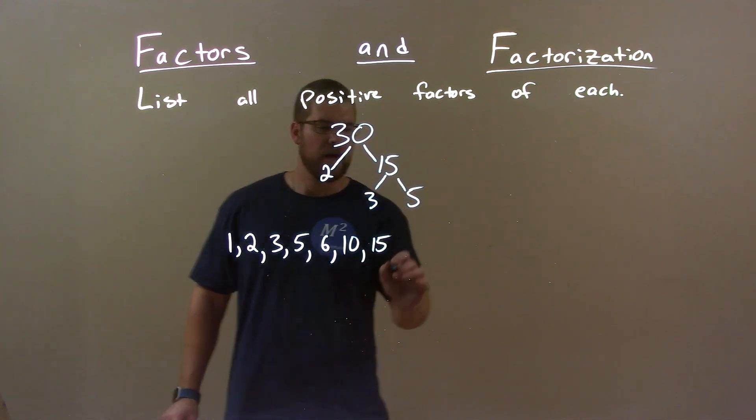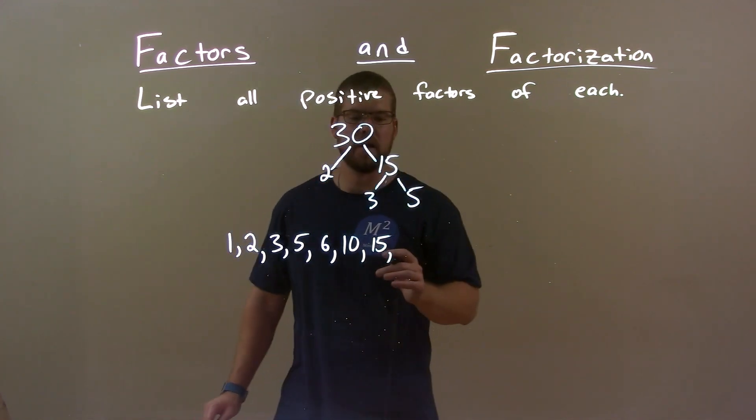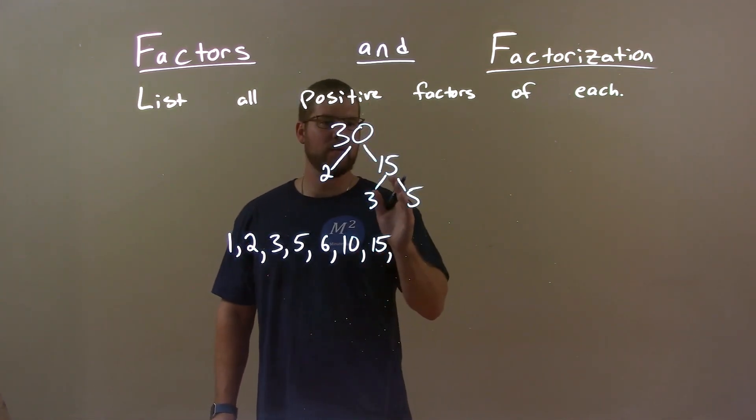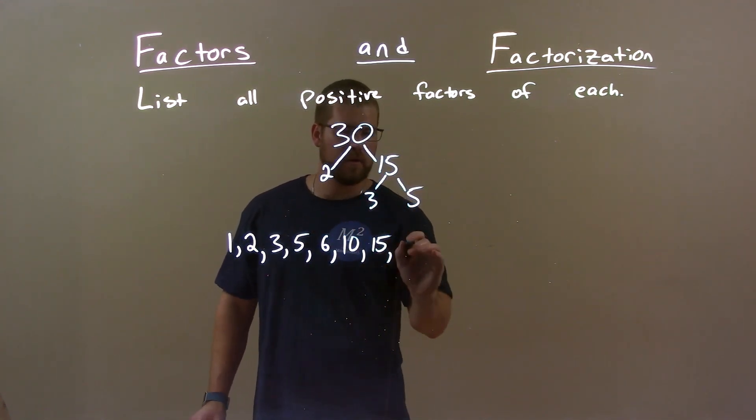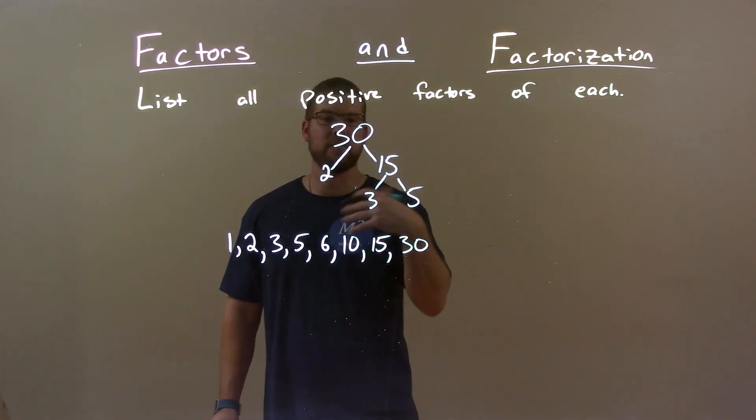And now I'm actually pretty much done. Once I get to halfway there's nothing - 16 times 2 is 32. It's going to be past 30. So the last number here is 30 because 30 is divisible by itself.